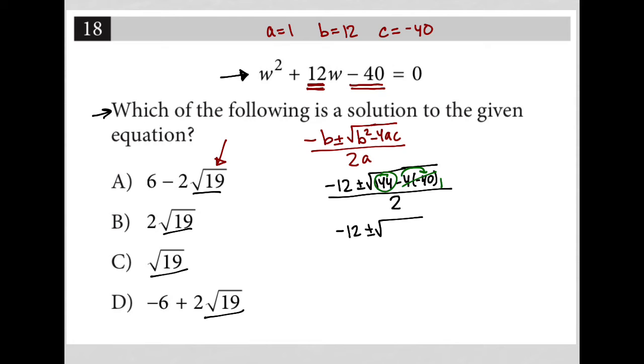So this would be 160. So then 160 plus 144 is 304. So that's the total quantity that I'd have under the radical there. And this is still all divided by 2.